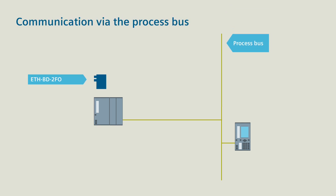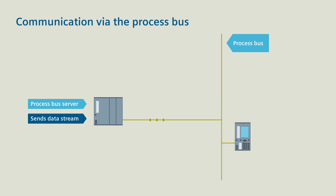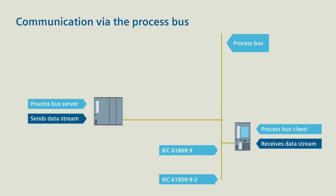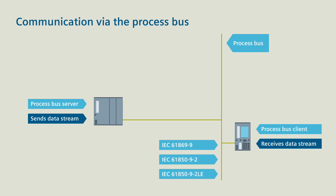The communication module installed in the C-Protek merging unit is configured as a process bus server. It sends a data stream of digitalized information to the C-Protek 5 device. In this device, the same communication module is installed, configured as a process bus client. In that way, the C-Protek 5 device is able to receive the data stream. All the usual process bus standards are, of course, fulfilled.